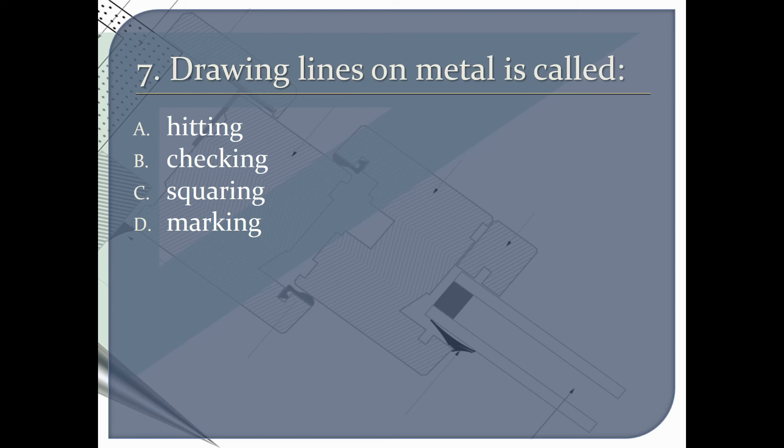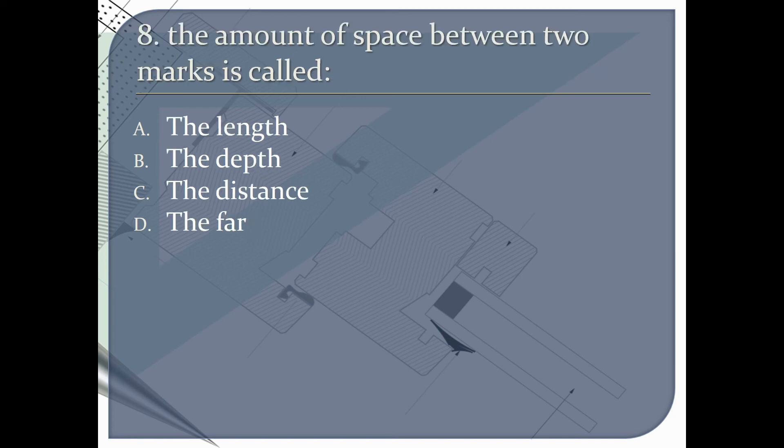Drawing lines on metal is called A hitting, B checking, C squaring, or D marking. The amount of space between two marks is called A the length, B the depth, C the distance, or D the far.